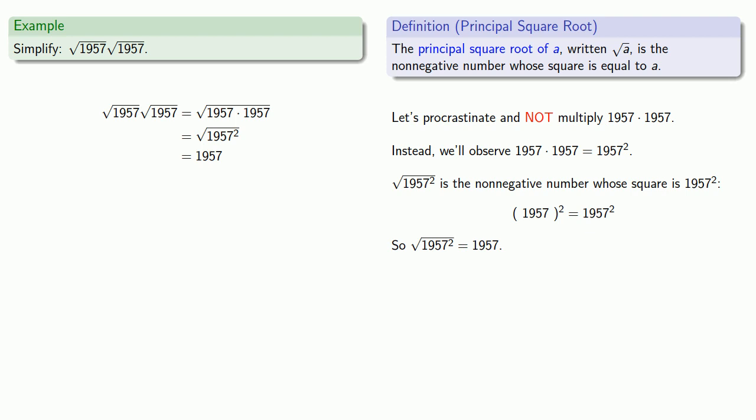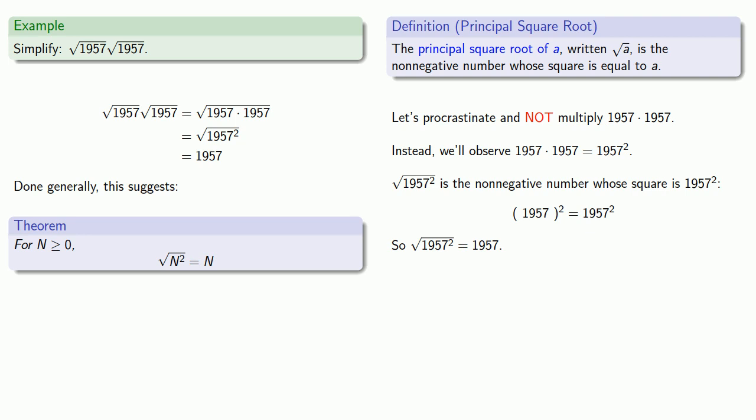And if we do this generally, this suggests the following: for n greater than or equal to 0, the square root of n squared is just n.